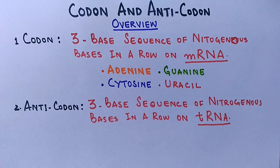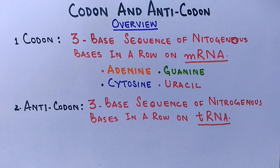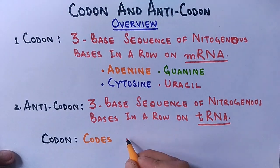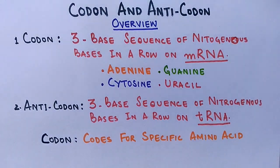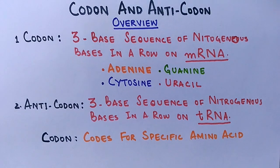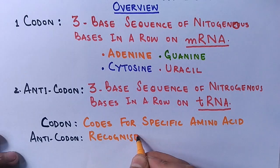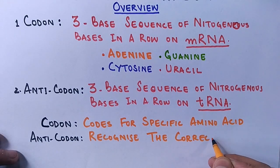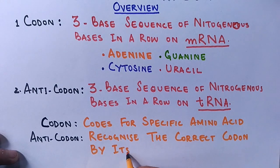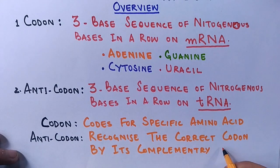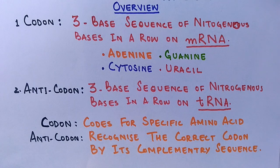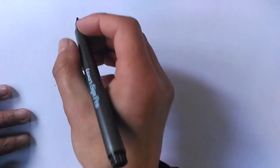The codons specify which amino acid is to be added to the growing polypeptide chain, so a specific codon codes for a specific amino acid. tRNA acts as a carrier, bringing amino acids to the ribosome where translation is underway. The anticodon on tRNA ensures that the correct amino acid is added when its complementary sequence matches the codon.